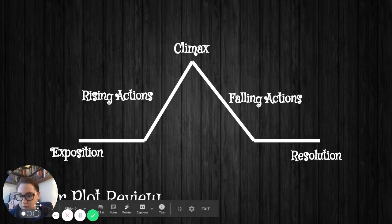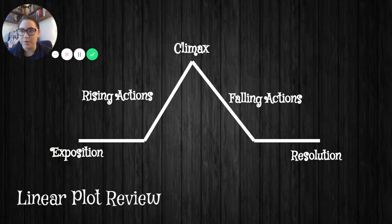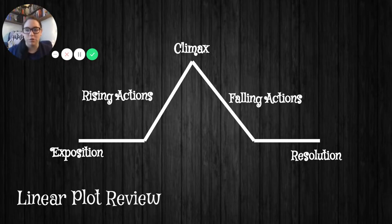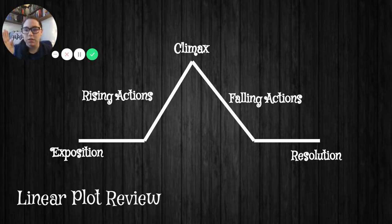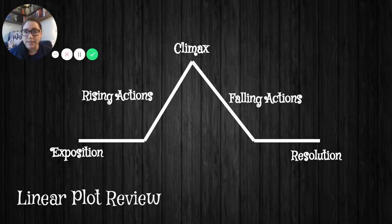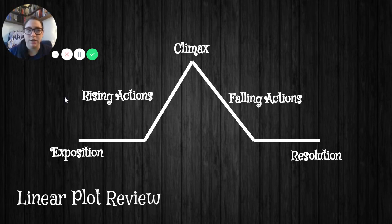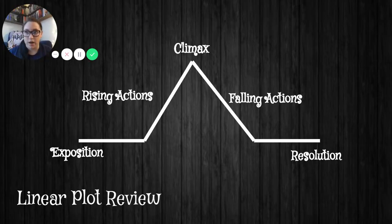The first thing we're going to do is review some of the linear plots. Linear is just like a line, which means you're going from point A to point B in one direction the whole time. First we have our exposition, and that's when we're introducing the story — getting to know the characters, the setting is being introduced. It's really just the start of the story. Then we have the rising action, which is when you start to understand what the problem or conflict of the story is going to be, introducing some of the issues arising for our characters.